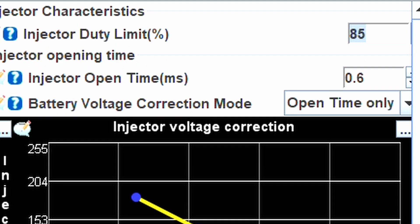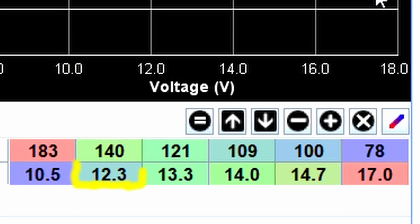If we look down here at 12.3 volts, you'll see that I'm at 140%. So my open time there is 140% of 0.6 milliseconds. So 0.6 times 1.4.